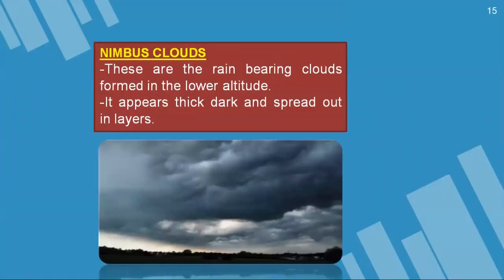Nimbus cloud — these clouds are also known as rain bearing clouds, which are formed in the lower altitude. They are the ones which cause most of the rain. They appear very thick, dark and spread out in layers in the sky. I hope you have understood the various topics of this chapter — this is the first part of the chapter on weather and climate. More explanations will be updated in your second video. Please read your books and texts as much as possible, and try to solve the questions that are in your book. Thank you.